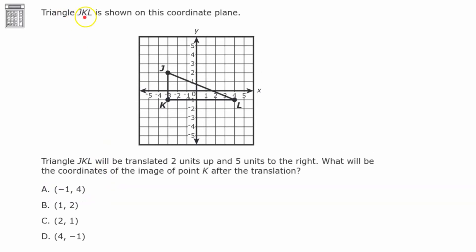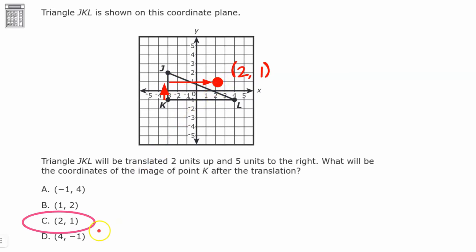Now we have triangle JKL shown in a coordinate plane. Triangle JKL will be translated 2 units up and 5 units to the right. What will be the coordinates of the image of point K after the translation? Welcome back — going 2 units up from K and 5 units to the right, K will end up at the ordered pair (2, 1), which is choice C.